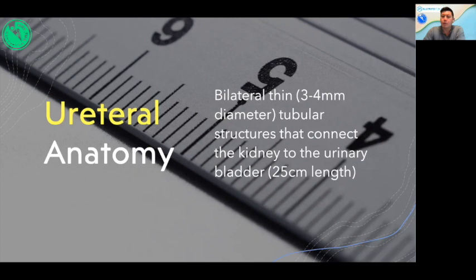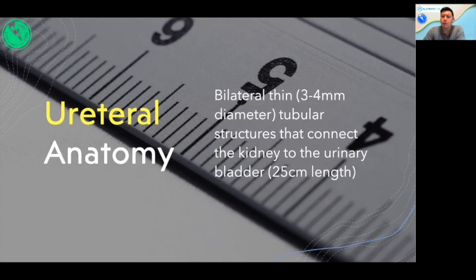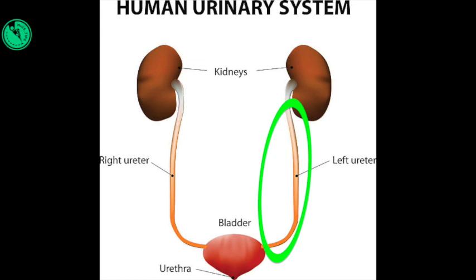Ureter anatomy. They're bilateral thin, about 3 to 4 millimeters in diameter, tubular structures that connect the kidney to the urinary bladder. They're about 25 to 30 centimeters in length. Interestingly, the left ureter is longer due to the more cranial position of the left kidney.